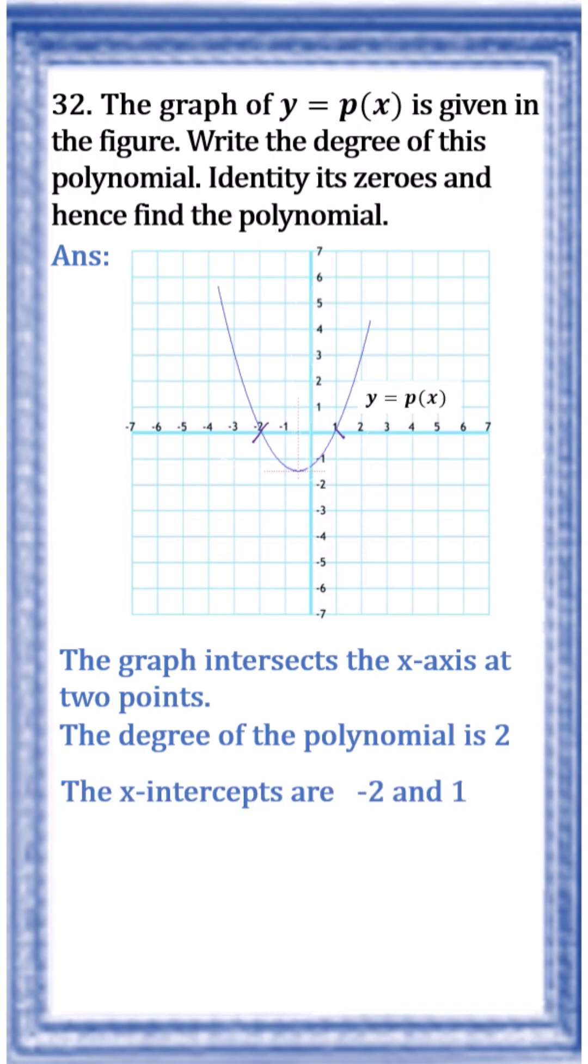The x-intercepts are negative 2 and 1. This is negative 2, this is 1. So, the zeros of the polynomial are negative 2 and 1.